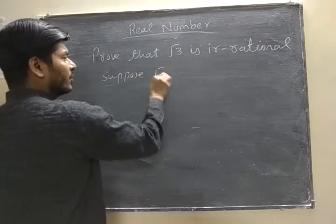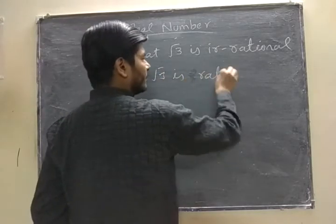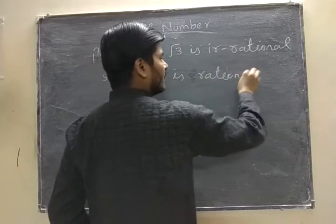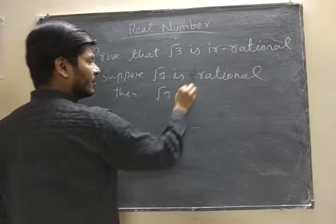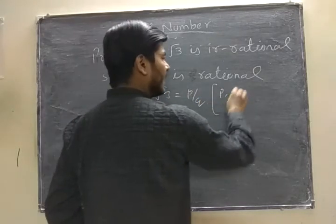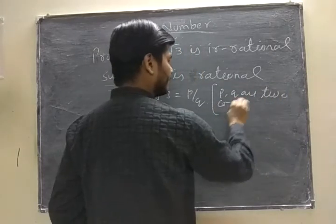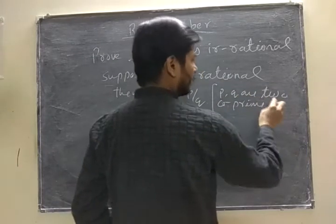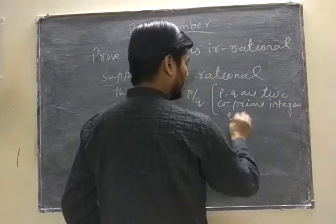Suppose √3 is rational. Since it is rational, then it can be written in the form of P by Q, where P and Q are two co-prime integers and Q not equal to 0.